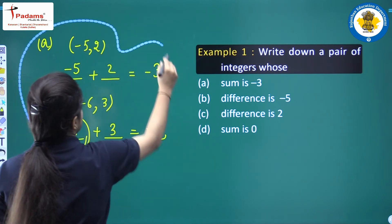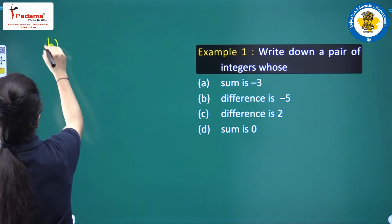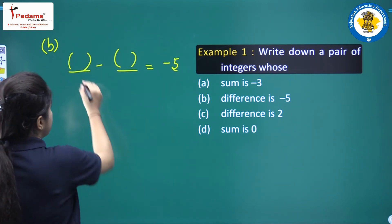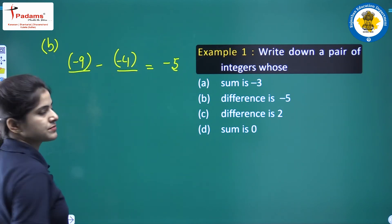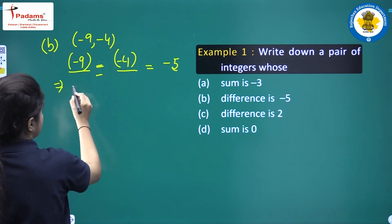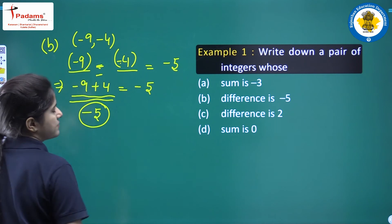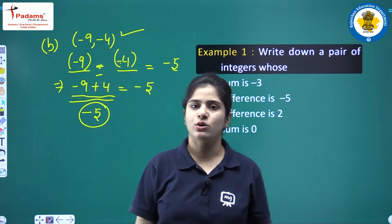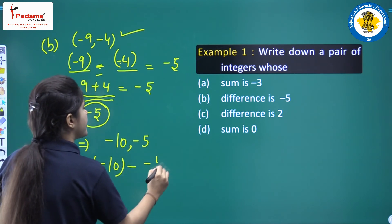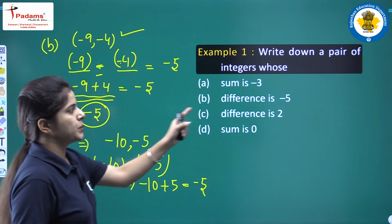The second part: find a pair of integers whose difference is minus 5. If we take minus 9 and minus 4, then minus 9 minus (minus 4) equals minus 9 plus 4 equals minus 5. You can also write it as minus 10 and minus 5: minus 10 minus (minus 5) equals minus 10 plus 5 equals minus 5. So the pair of integers whose difference is minus 5 is minus 9 and minus 4.